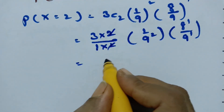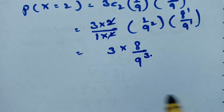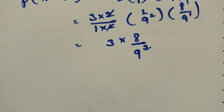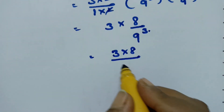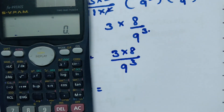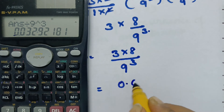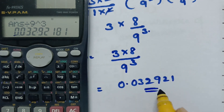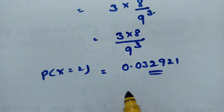So simplifying: this is 3 × 8 divided by 9³. The value here is 9³ in the denominator. So this equals 3 × 8 divided by 9³, which gives 24/729. Using the calculator, this value is approximately 0.032921. So this is the value of P(X = 2).